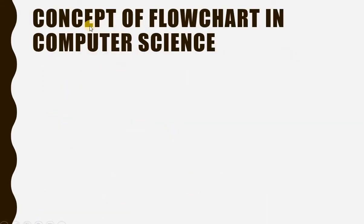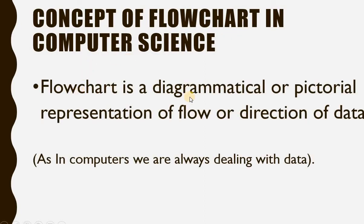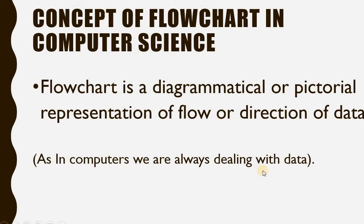Now we will learn the concept of flowchart in computer science. In computer science, flowchart is a mathematical or pictorial representation — it is in the form of a diagram or picture. We call it the mathematical or pictorial representation of the flow or direction of data, as in computer science we are always reading the data.